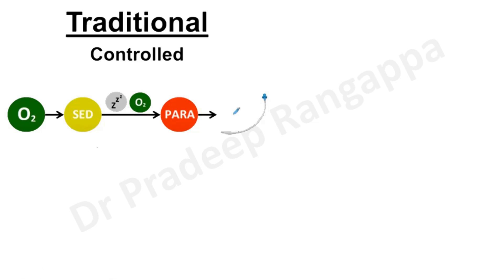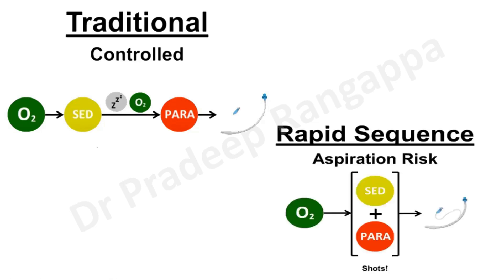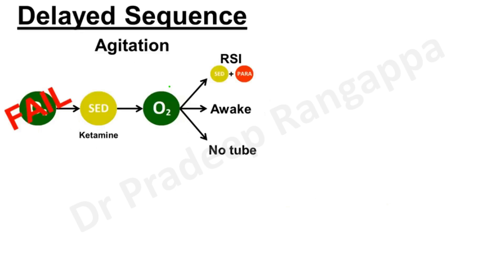Rapid sequence induction is also more commonly what we do, especially when the patient is on a full stomach, where we pre-oxygenate and use sedation and paralytics together and then intubate the patient. RSI is the more common one that we use.